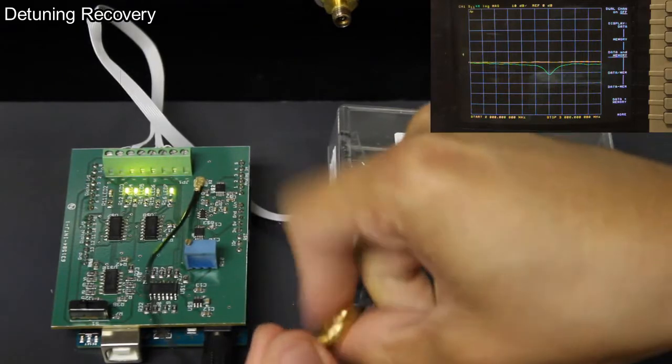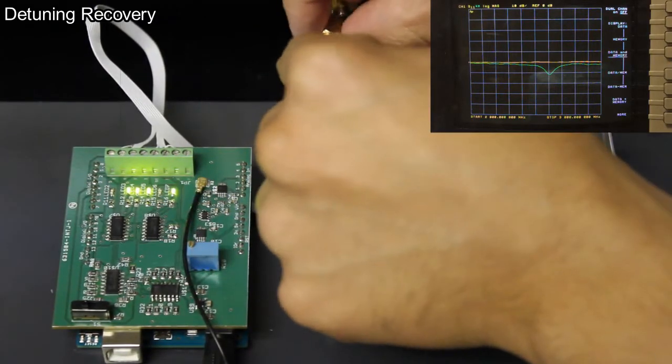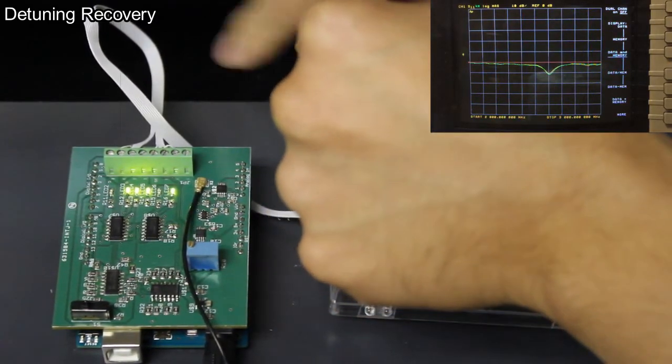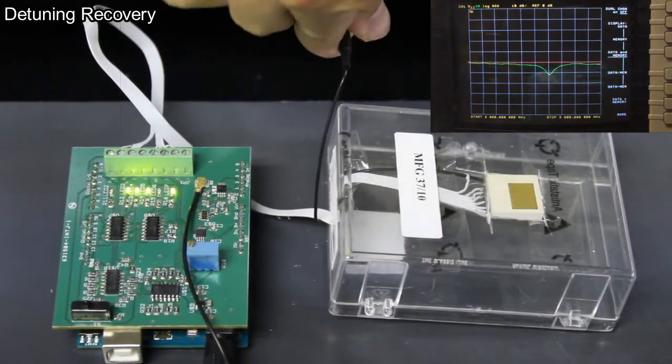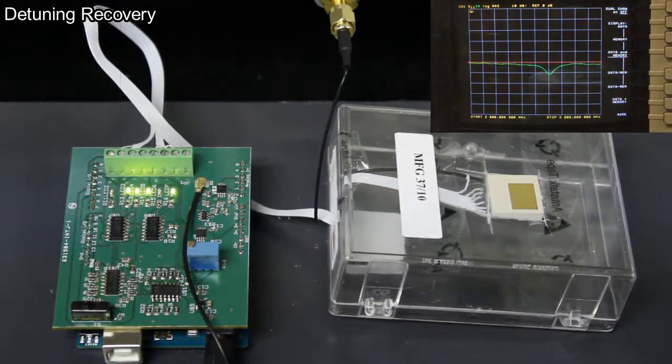Again, notice LEDs 1, 2, 3, and 5 are activated, and the antenna has indeed been retuned to its original state as seen by the overlapping yellow and green lines on the network analyzer.